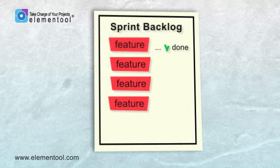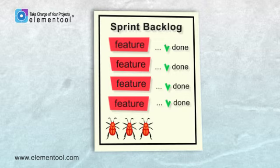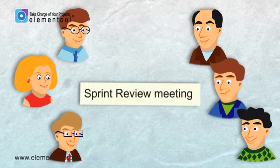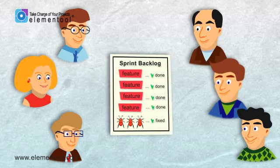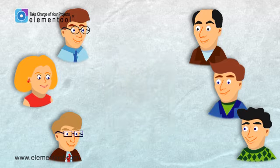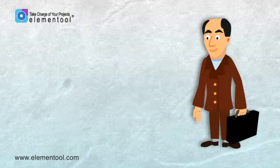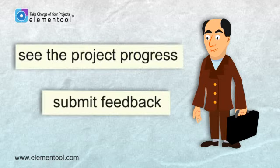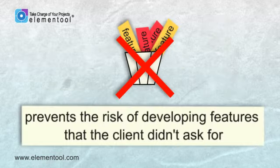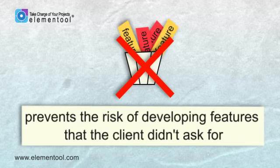In every sprint, the team must complete the work that was defined for that sprint. Bugs that are related to the features on the sprint backlog should also be fixed as part of the sprint. At the end of each sprint, a sprint review meeting is held. In this meeting, the team presents what was developed during the sprint to the product owner and other stakeholders. This meeting helps to decide what the team should do next, and the clients can see the project progress and submit feedback. It prevents the risk of developing features that the client didn't ask for.